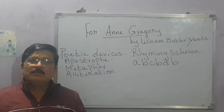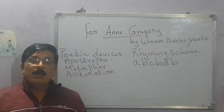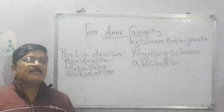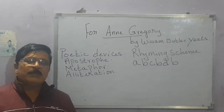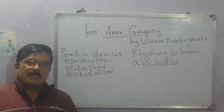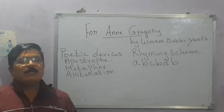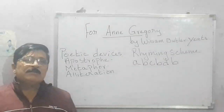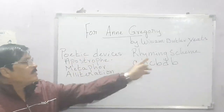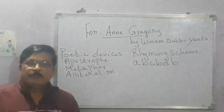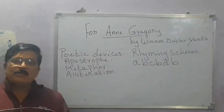In 'Anne Gregory' there are three poetic devices used by the poet. I will tell you what these three poetic devices are and explain them so that even for other poems you will be able to relate to them. The three poetic devices used in 'Anne Gregory' are: one, apostrophe; two, metaphor; and three, alliteration.